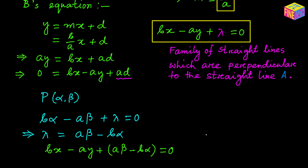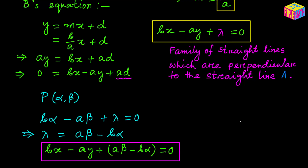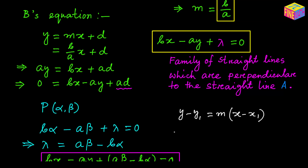Another easy way to remember this: using the point-slope form Y minus Y₁ equals M times (X minus X₁). Since M equals B over A and the line passes through point P with coordinates alpha comma beta, we write Y minus beta equals B over A times (X minus alpha). This is easy to remember when finding the perpendicular line through a given point.